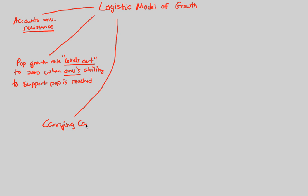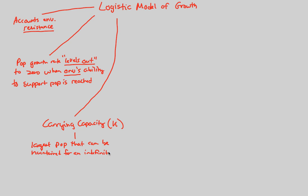The carrying capacity is the term we use when a population has reached zero growth. It is denoted by the letter capital K. Carrying capacity is further defined as the largest population that can be maintained for an indefinite period by a particular environment.